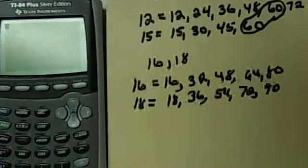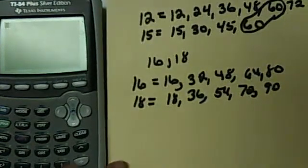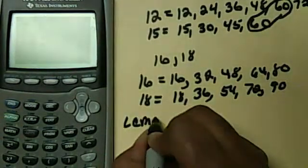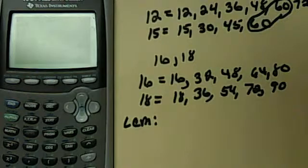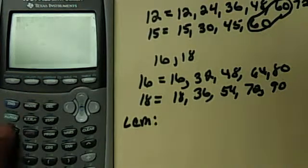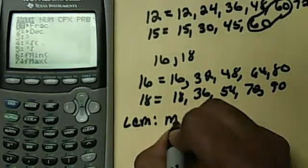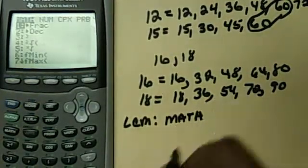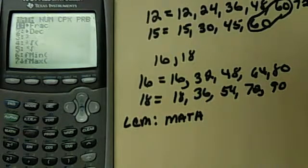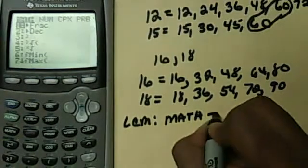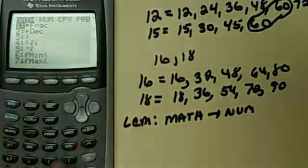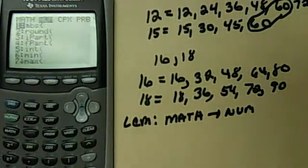To find the LCM in your calculator, you are going to hit the math button, which is down here under 2nd, alpha, then math. So you're going to hit the math key. And you should have seen the GCF video. If you looked at that, it's going to be the same step, math. Then you go over to number, which is N-U-M. So you have to go over, hit the over button here, to number.